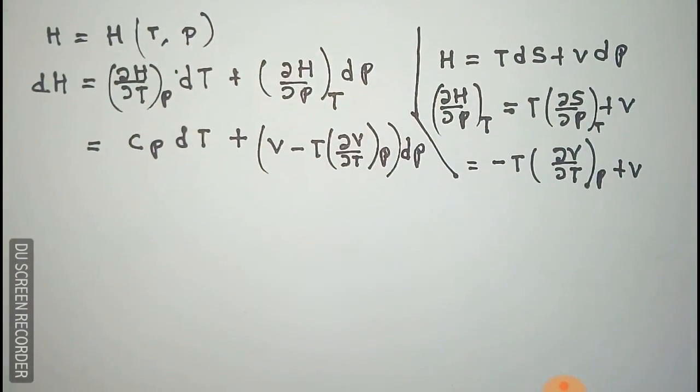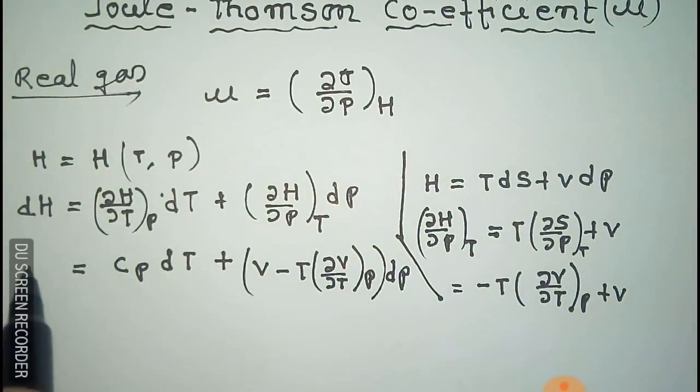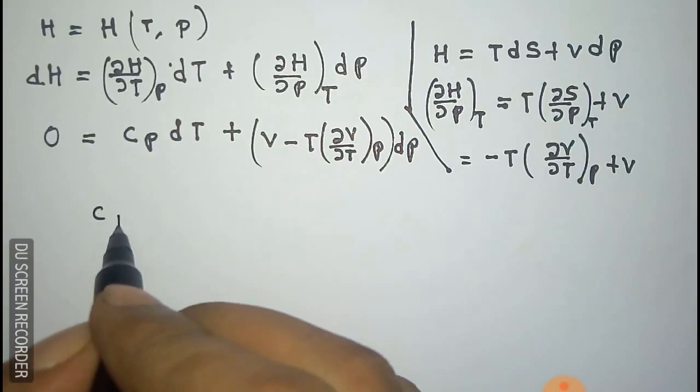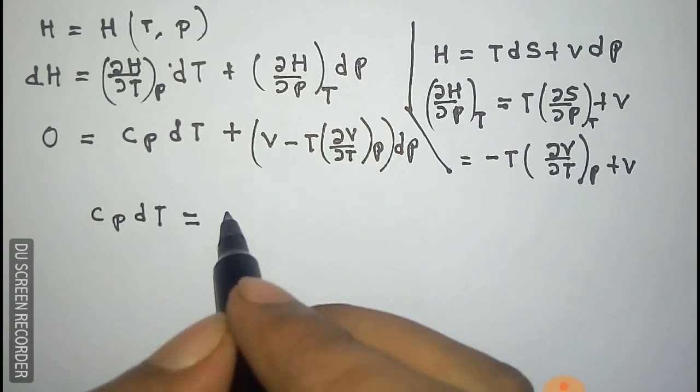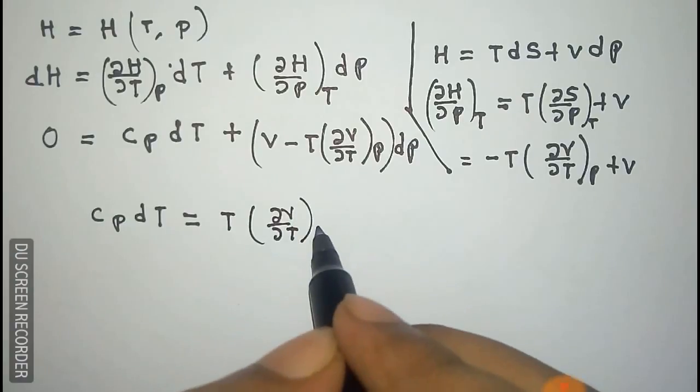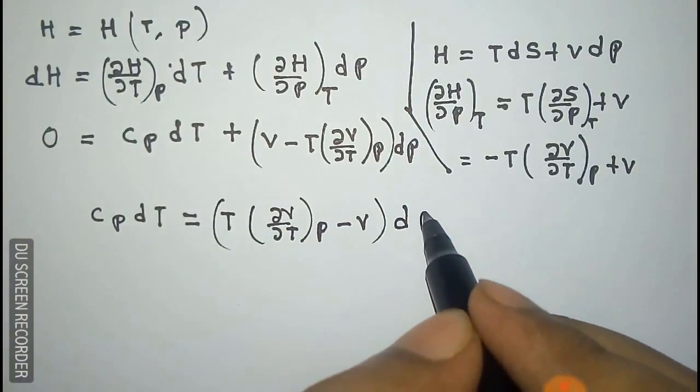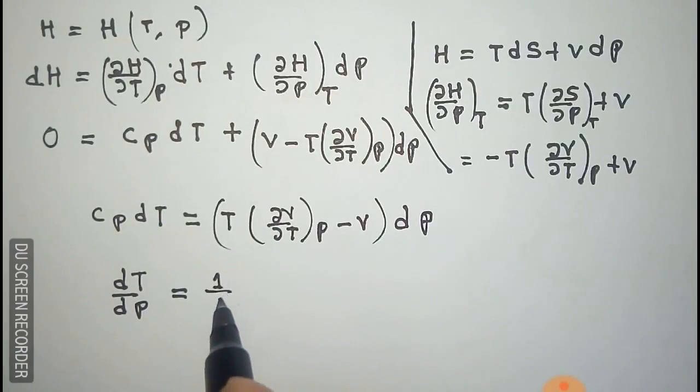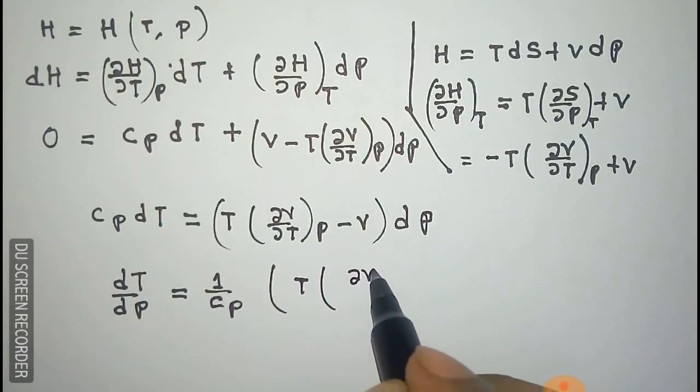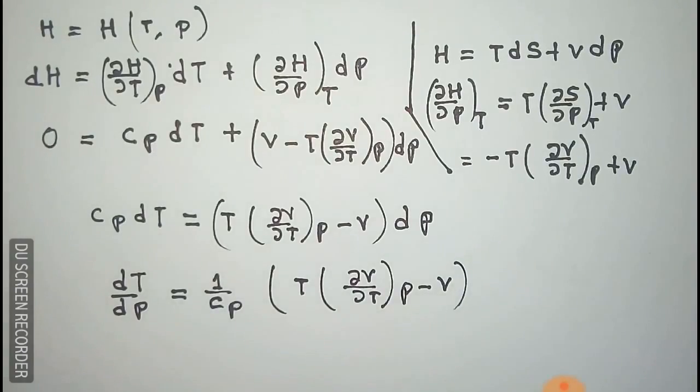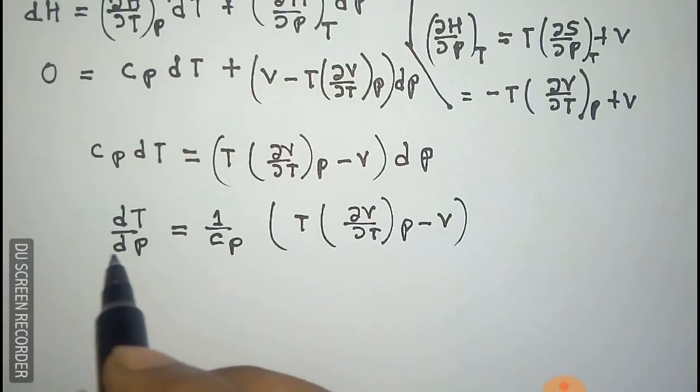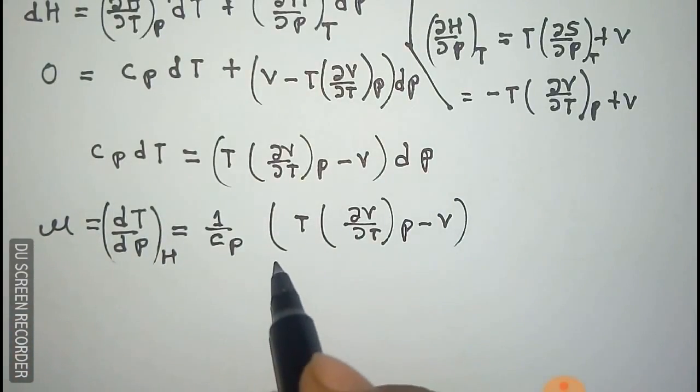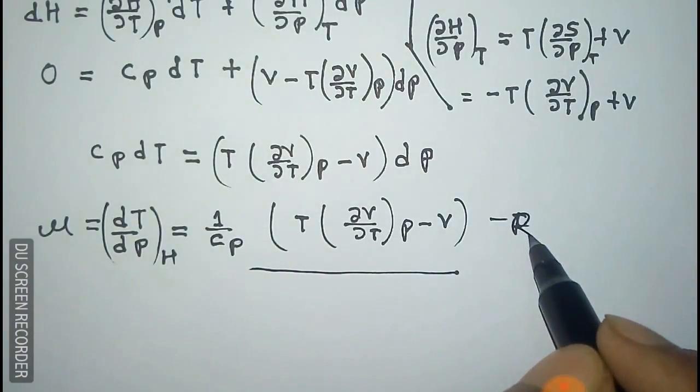Here the enthalpy H is constant, so dH equals zero. This gives us dT/dP equals 1 by Cp times (T del V del T at constant pressure minus V). Since this all happens at constant enthalpy H, this term is called the mu coefficient. This is the Joule-Thompson coefficient for real gas.